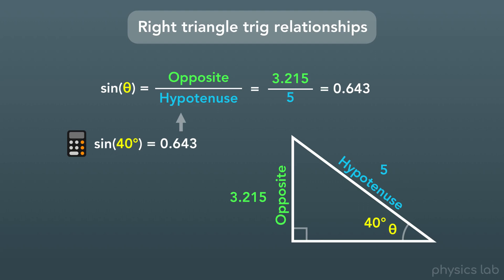And that's what this relationship means. Sine of theta equals the opposite side length divided by the hypotenuse side length. Or in this case, sine of 40 degrees equals 3.215 divided by 5, which are both equal to 0.643.